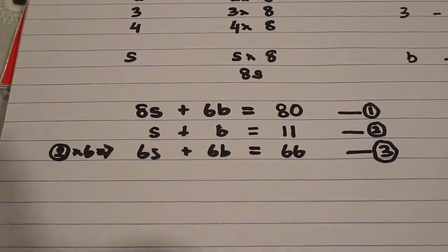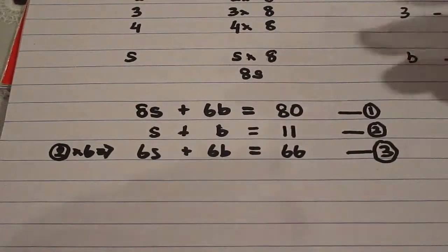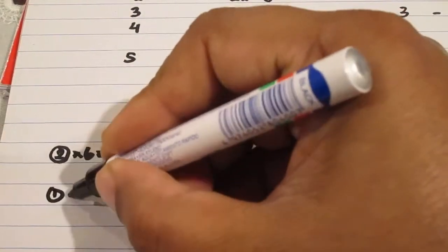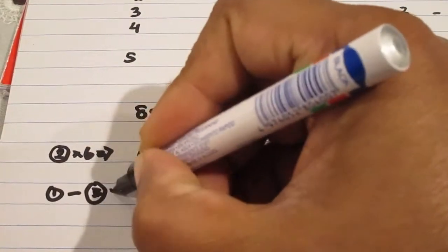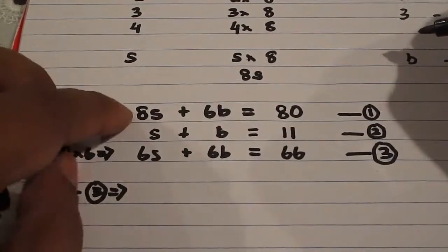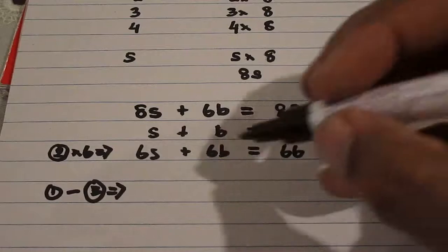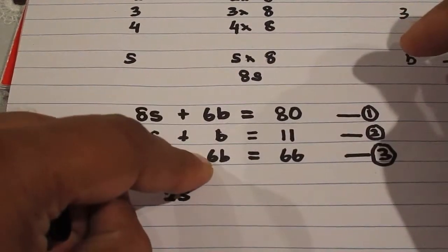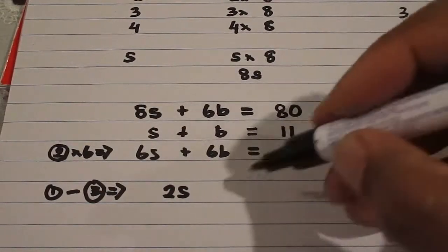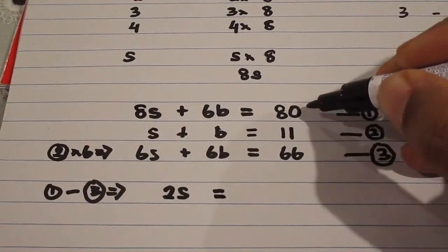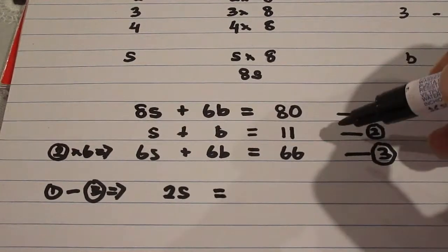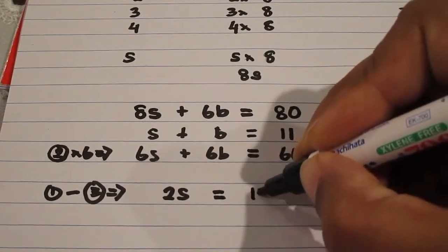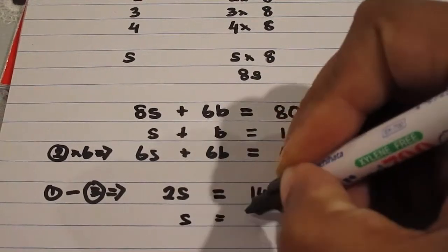Now you can see that 6b here and 6b here. So if I subtract this equation from that equation, so equation 1 minus equation 3 will give me 8s minus 6s. Eight something minus six something is two something. 6b minus 6b is zero. So that's why we did it that way to get rid of the b's. And that will equal on the other side, it's 80 minus 66. So 80 minus 60 is 20, minus 6 more is 14, which gives us 2s equals 14.